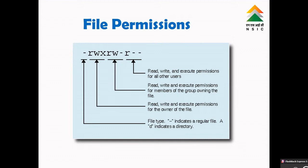R means read, w means write, x means execute. The next 3 digits, i.e. the 5th, 6th, and 7th digits, mention the permissions for members of the group owning the file. The next 3 digits — 8th, 9th, and 10th digits — of file permissions give permissions for all other users.